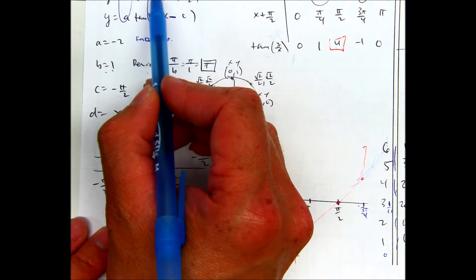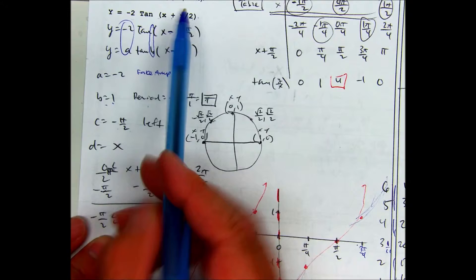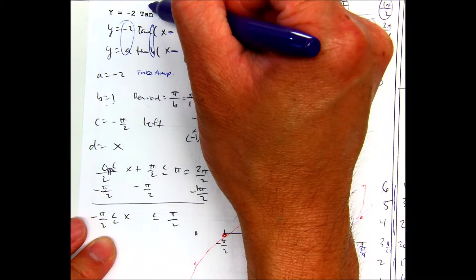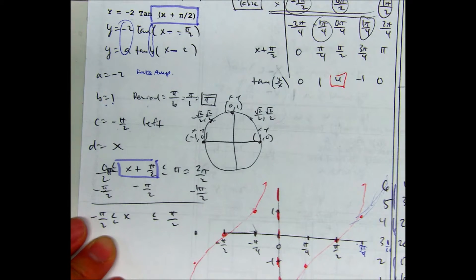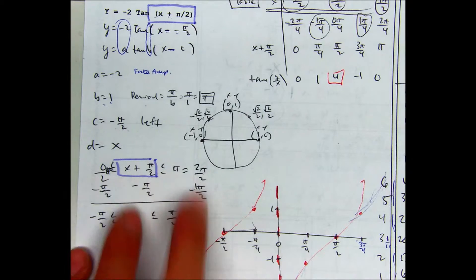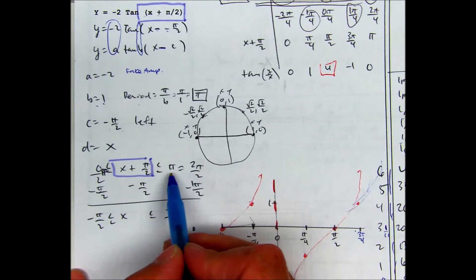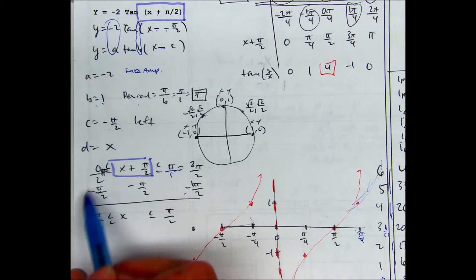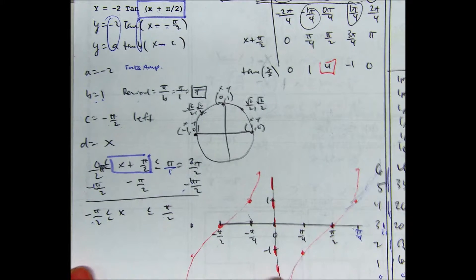When you have parentheses, you need to do a phase shift by setting the interior expression between 0 and π (since tangent finishes its period by π). Subtract π/2 from both sides: 0 becomes -π/2 and π becomes π/2. So the graph runs from x = -π/2 to x = π/2, with the midpoint at 0.